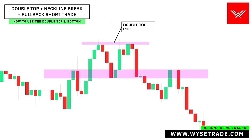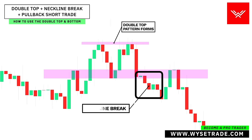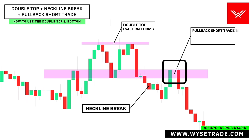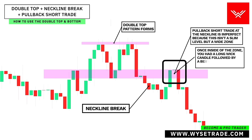Double top pattern. Neckline break here. This pullback short trade to the neckline is imperfect, because this isn't a slim level but a wide zone. Once inside of the zone, you had a long wick candle, followed by a bearish momentum candle confirmation.